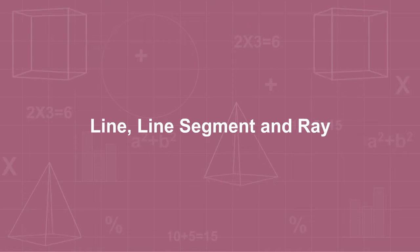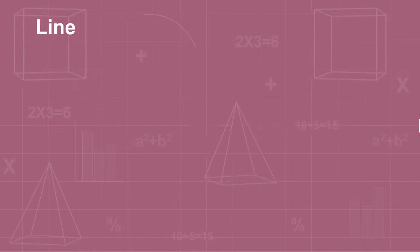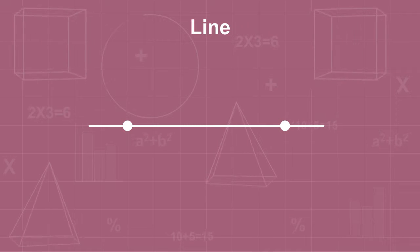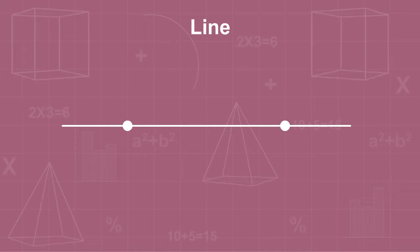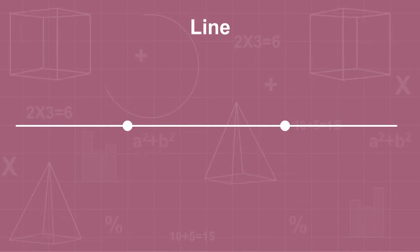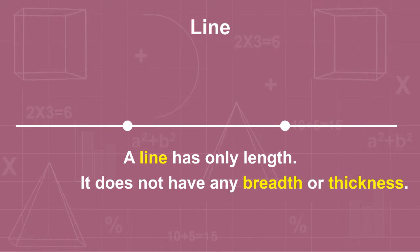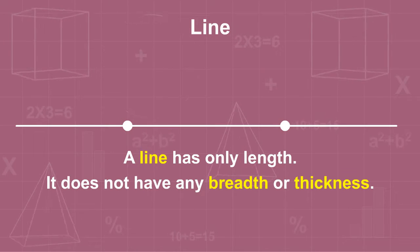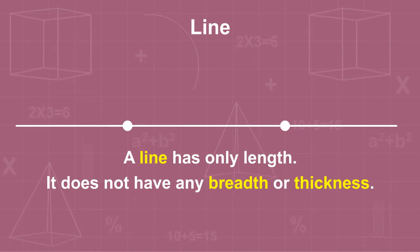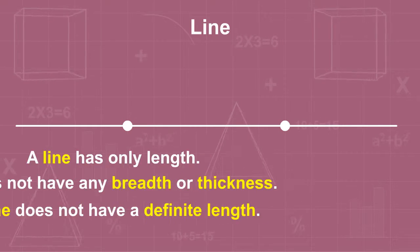A line can extend indefinitely in both directions. It has no endpoints. A line has only length; it does not have any breadth or thickness. A line does not have a definite length.